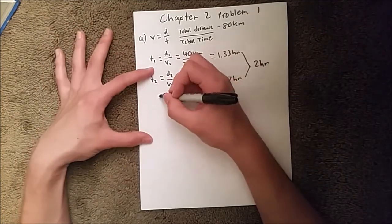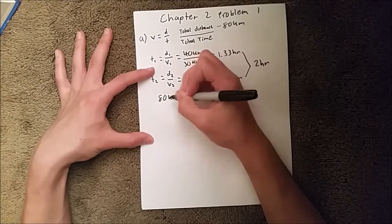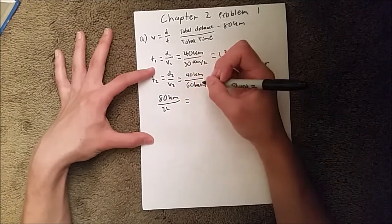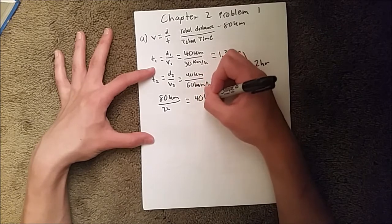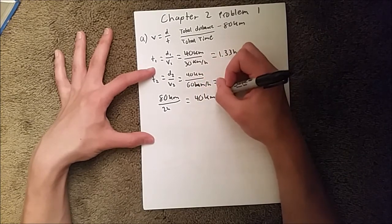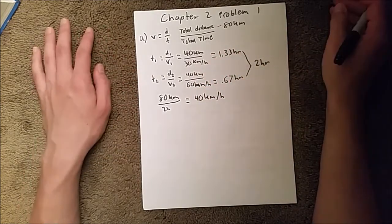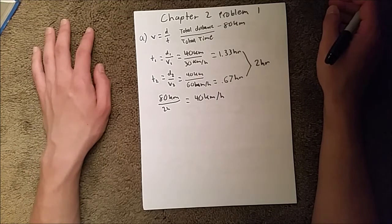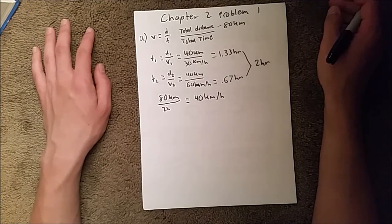So, to find our average velocity, we do 80 kilometers over 2 hours, and that is 40 kilometers per hour. So, that is the average velocity over the total trip.